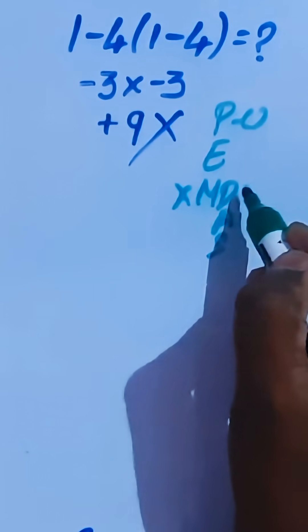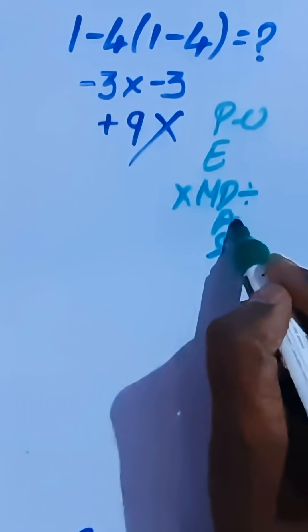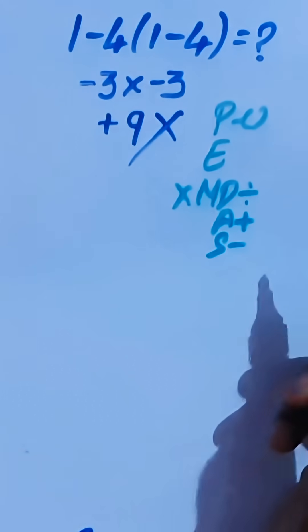M stands for multiplication, D stands for division, A stands for addition, S stands for subtraction.